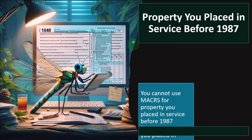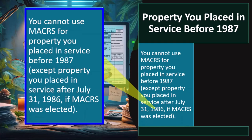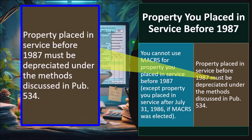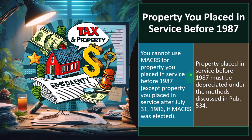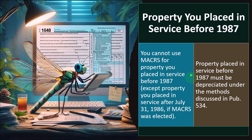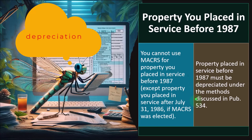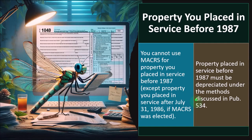You cannot use MACRS for property you placed in service before 1987, except property placed in service after July 31st, 1986, if MACRS was elected. Consistency is a standard accounting principle — once we make the election, we stay consistent. Property placed in service before 1987 must be depreciated under the methods discussed in Publication 534. From a logistical standpoint, if you have such property on the books and are using the same software, it should roll over properly and shouldn't be something you have to figure out too much.